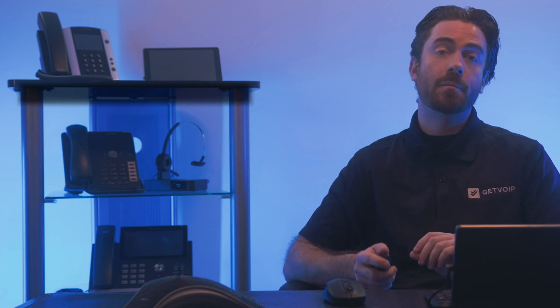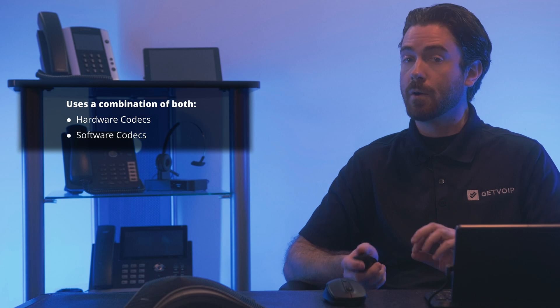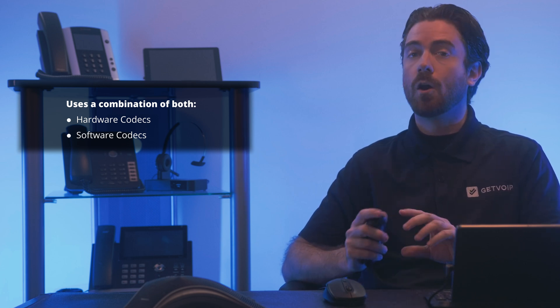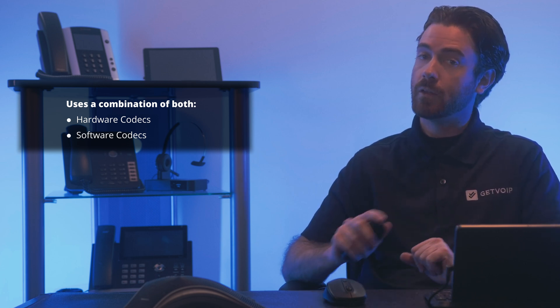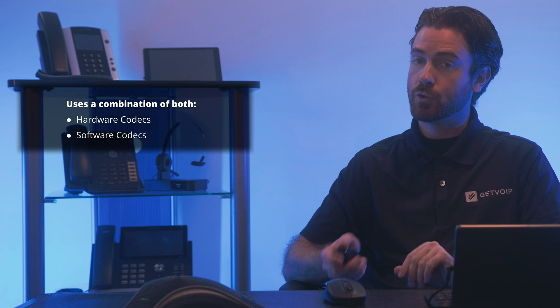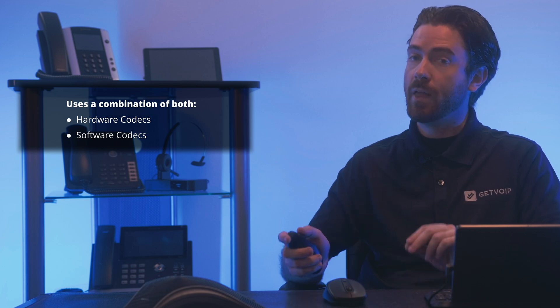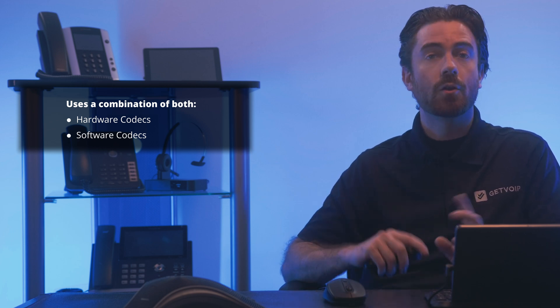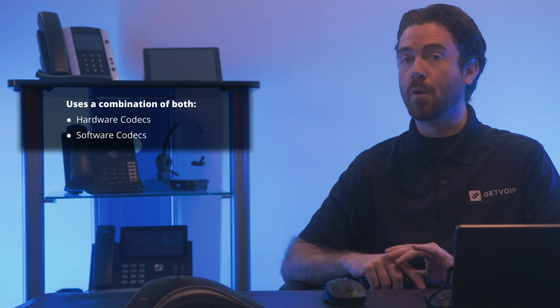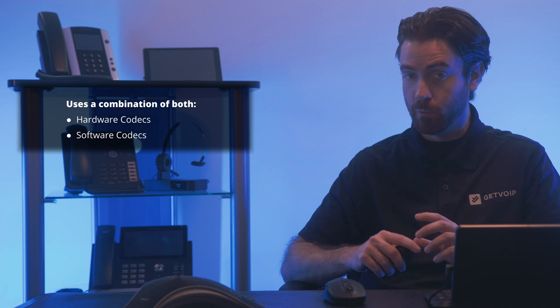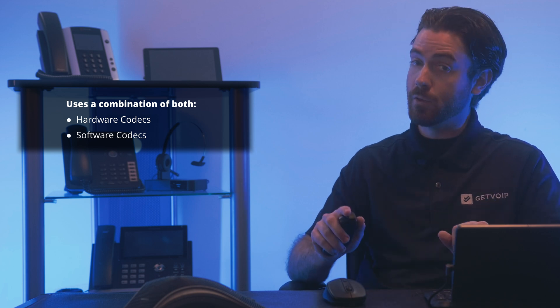Business VoIP telephony uses a combination of both hardware and software codecs. Hardware codecs are physical chips in any device that record, transmit, or play audio and video. Computers, tablets, cell phones, headsets, and VoIP phones or IP phones all contain codecs.